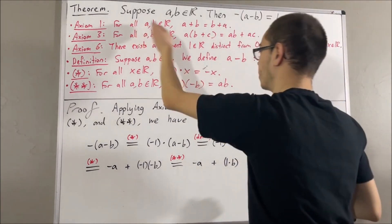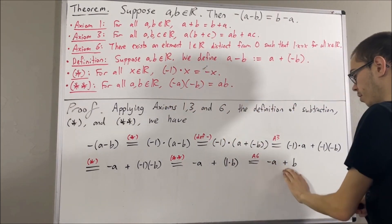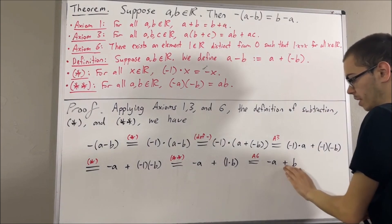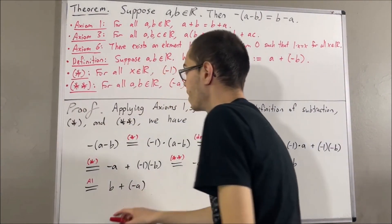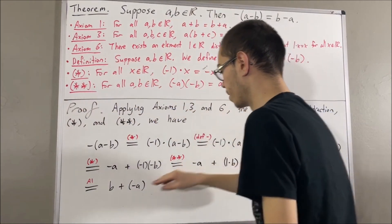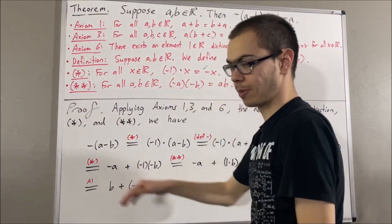But then, by axiom 1, the negative of a plus b is equal to b plus the negative of a. And then, by definition of subtraction, b plus the negative of a is equal to b minus a.